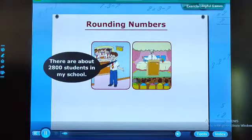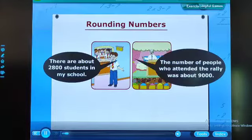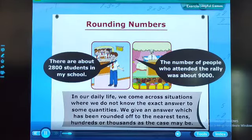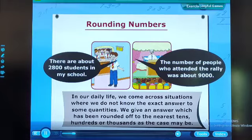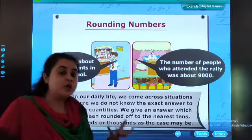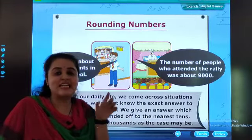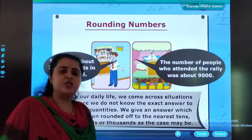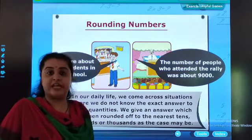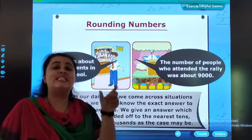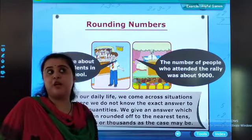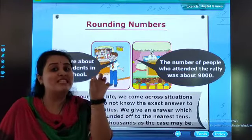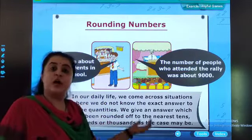There are about 2,800 students in my school. The number of people who attended the rally was about 9,000. In our daily life, we come across situations where we do not know the exact answer to some quantities. We give an answer which has been rounded off to the nearest tens, hundreds or thousands. At that time, we use rounding off for estimation.